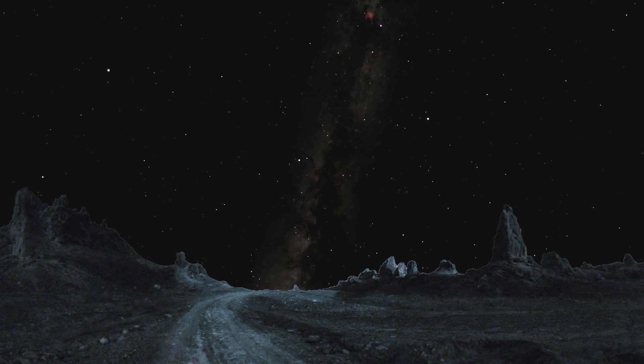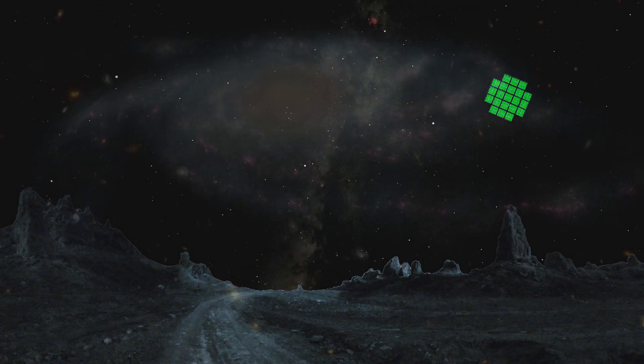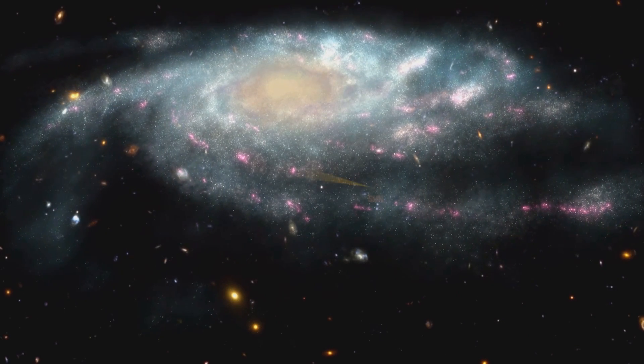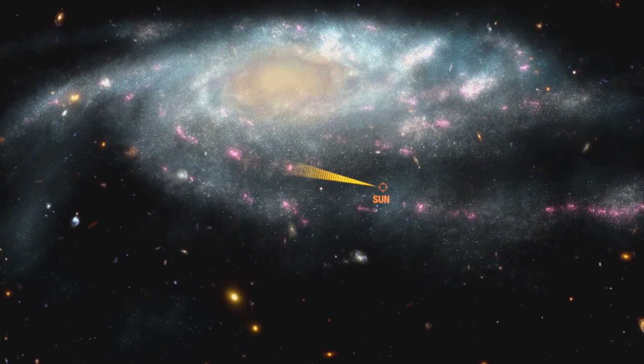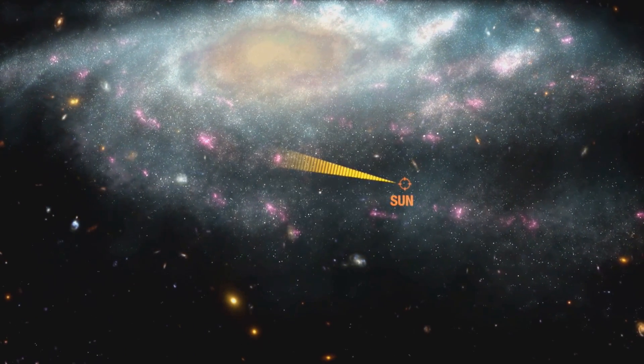Now, consider this. Kepler observed less than a third of a percent of the sky. And, it was only able to look at stars within 3,000 light-years of us. So, how many Earths might really be out there?